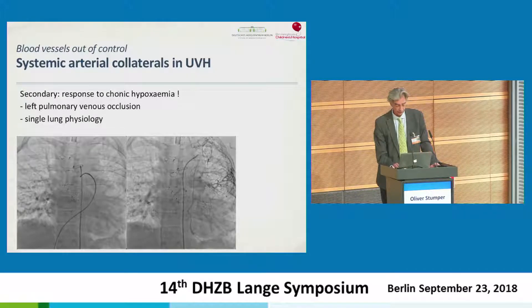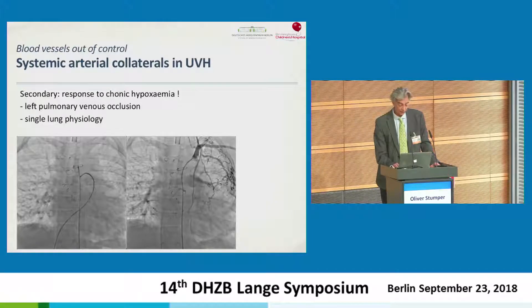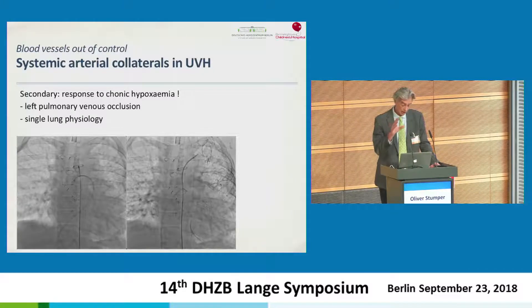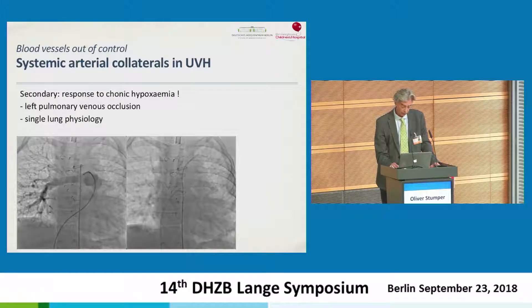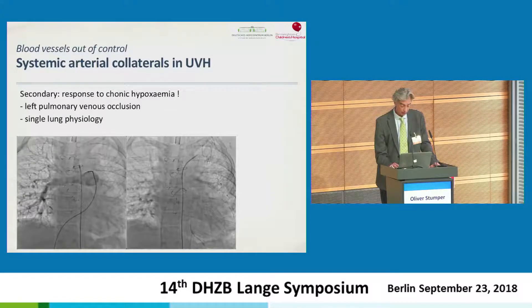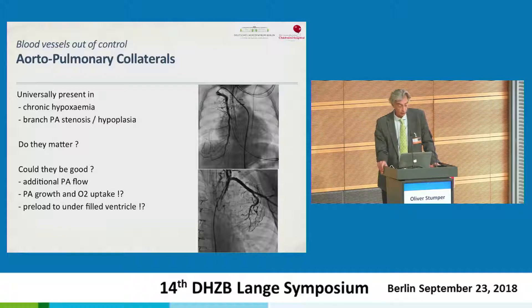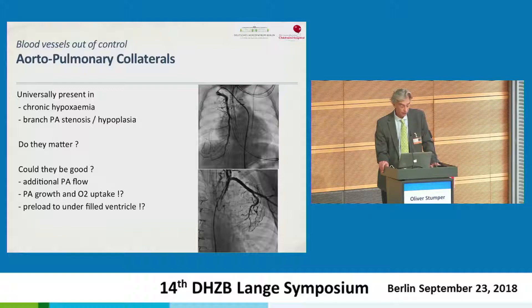In univentricular hearts we see collaterals quite commonly. This is a case with sclerosis of the left pulmonary vein — you see collaterals from the thoracic arteries to the left lung, providing minimal blood supply in single-lung physiology. Aorto-pulmonary collaterals are seen universally in chronic hypoxemia, branch PA stenosis, and hypoplasia. In the univentricular situation, it is probably hypoxia which drives the development of these collaterals.